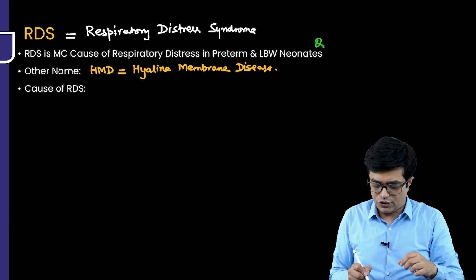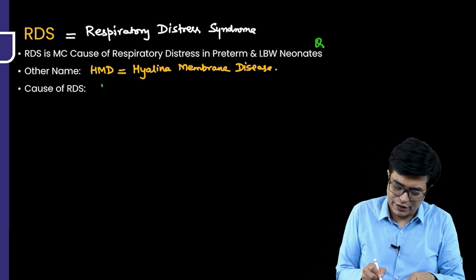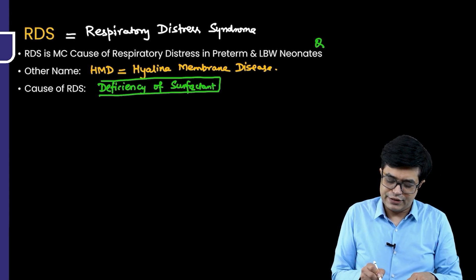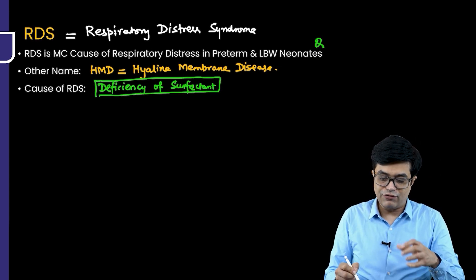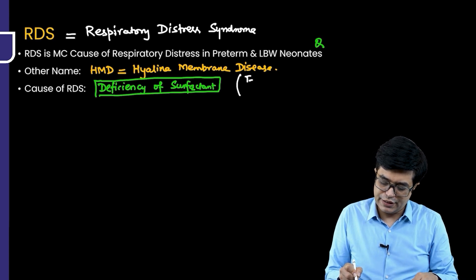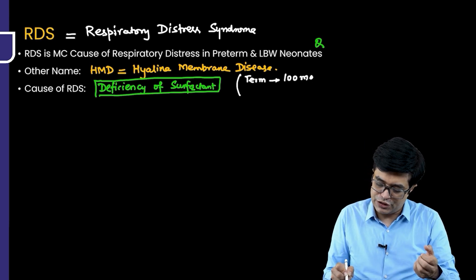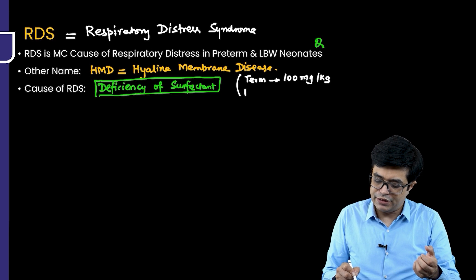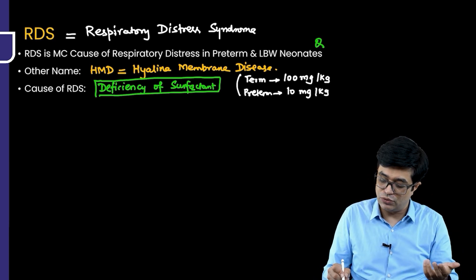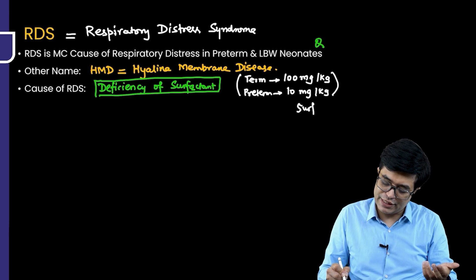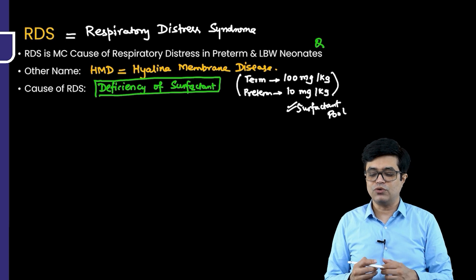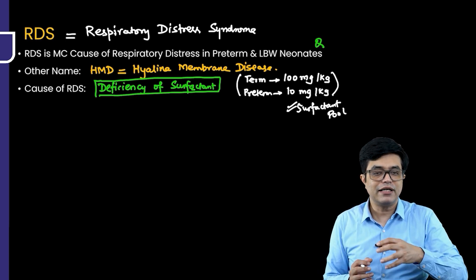The cause of RDS is deficiency of surfactant. In term neonates, the surfactant pool in the alveoli is about 100 mg per kg body weight. Whereas in preterm babies, it is on average 10 times less — that is 10 mg per kg or even lesser. The younger the child, the lesser is the surfactant pool. This is described in the AIMS protocol and can be asked as a fact-based question.